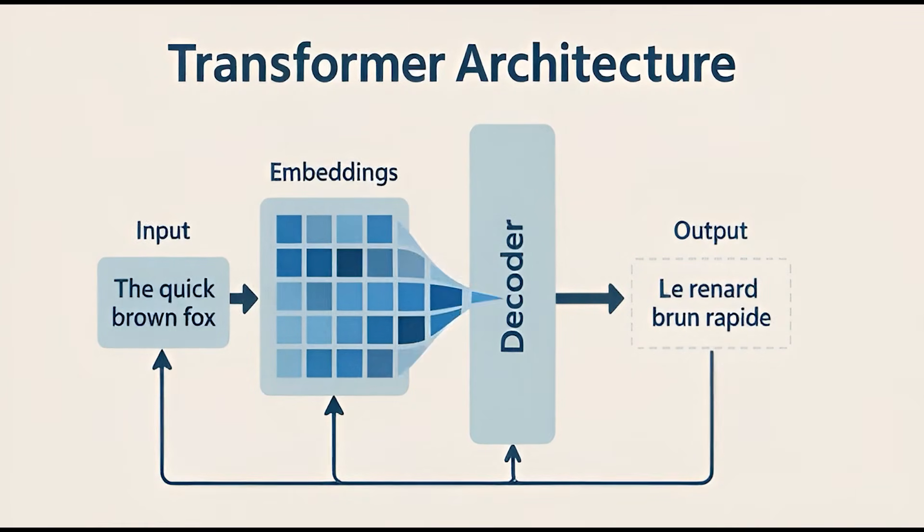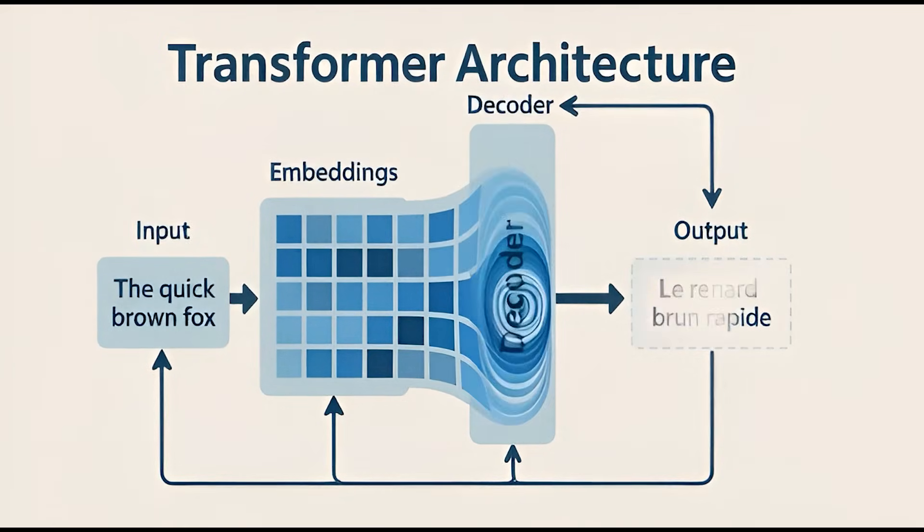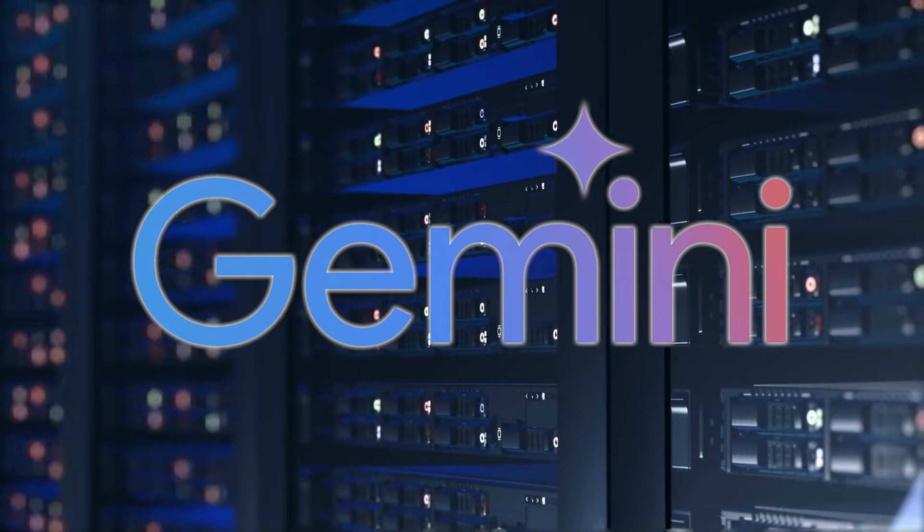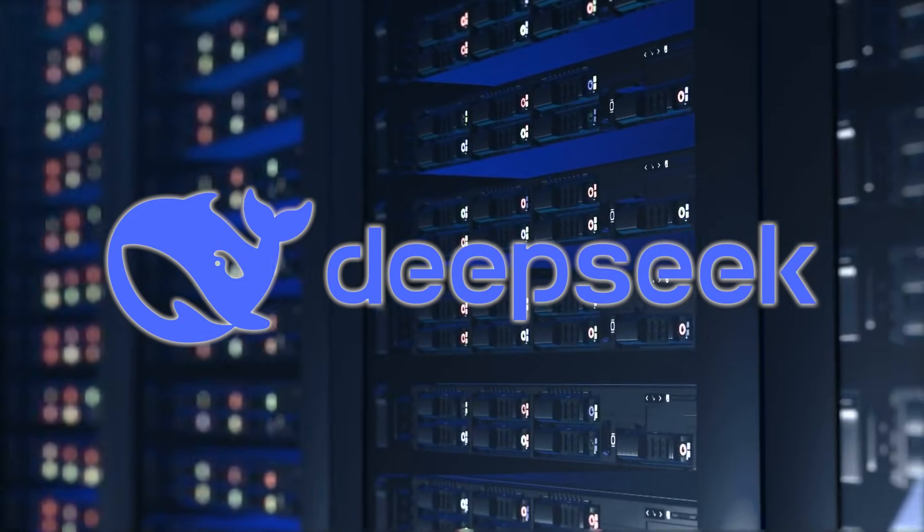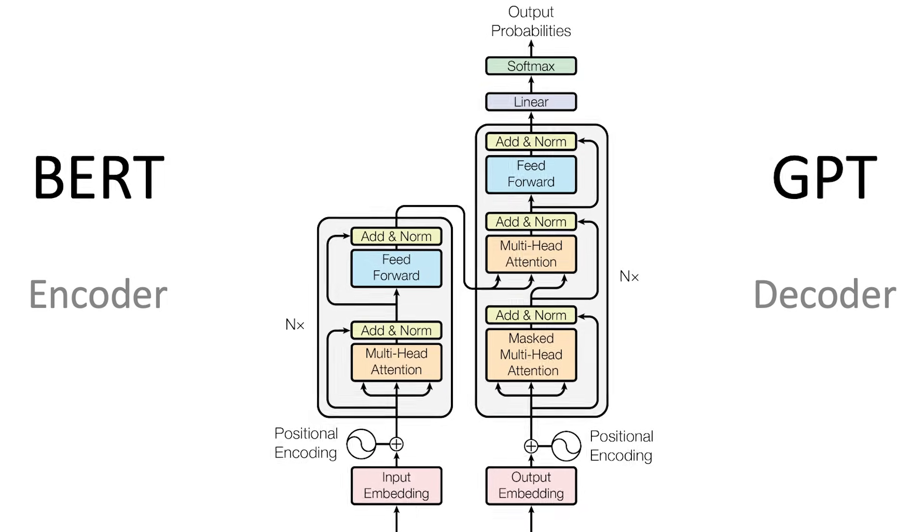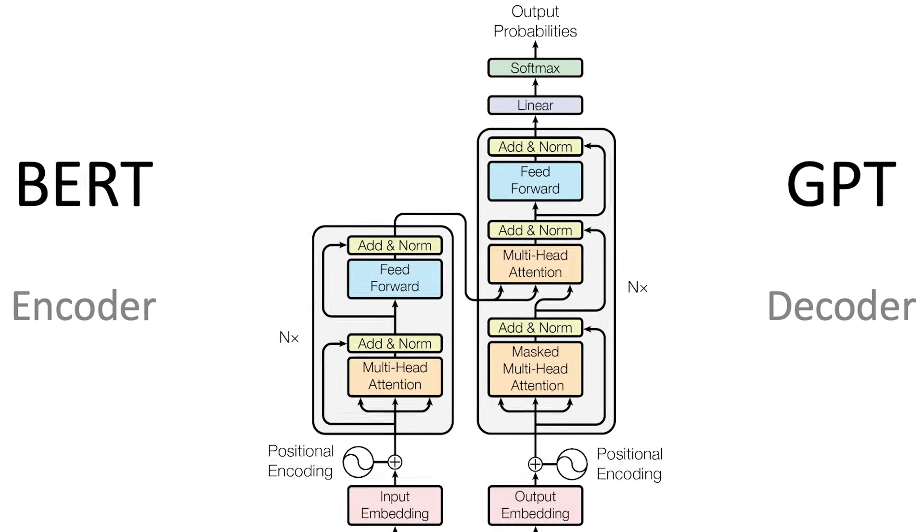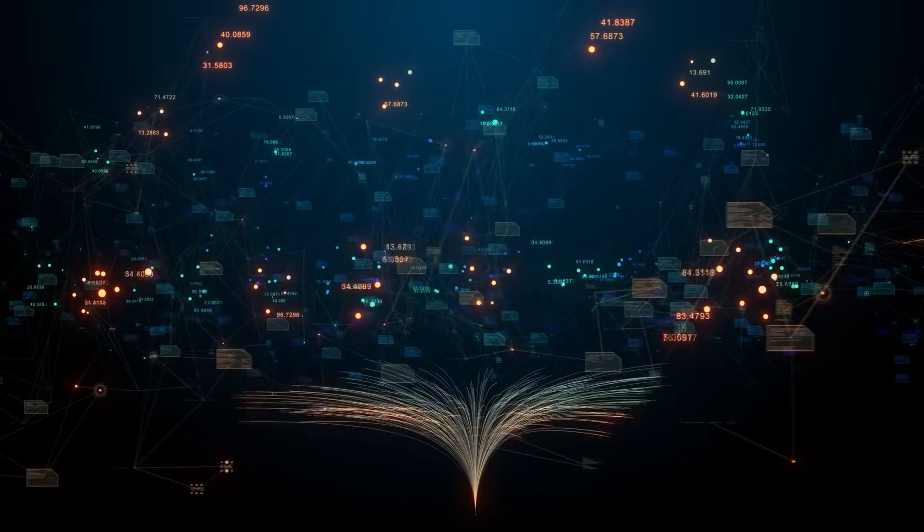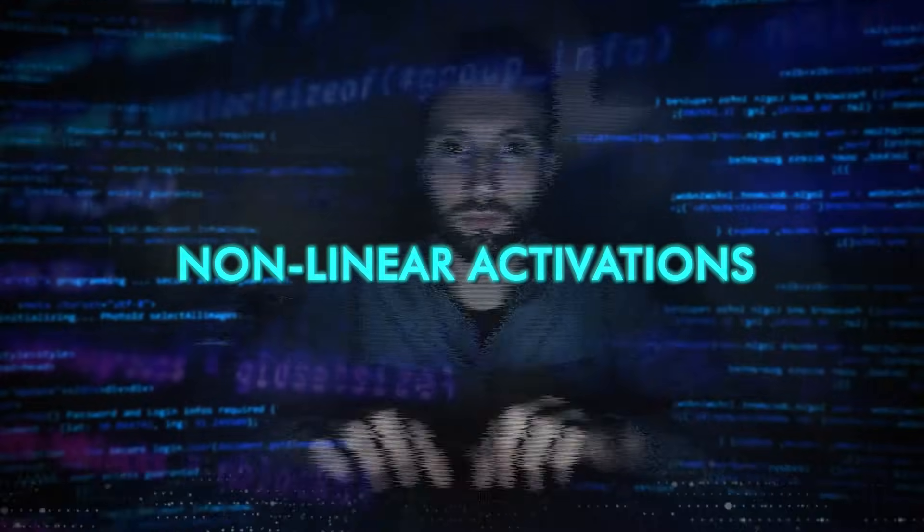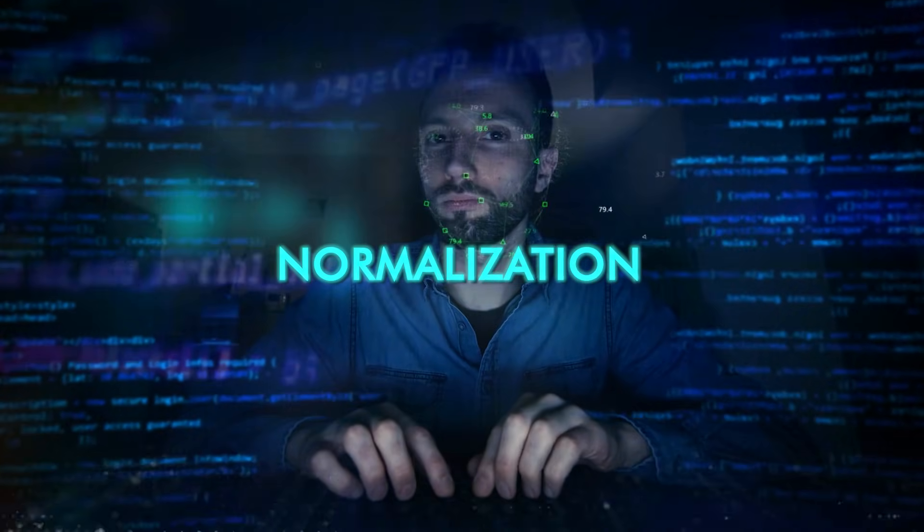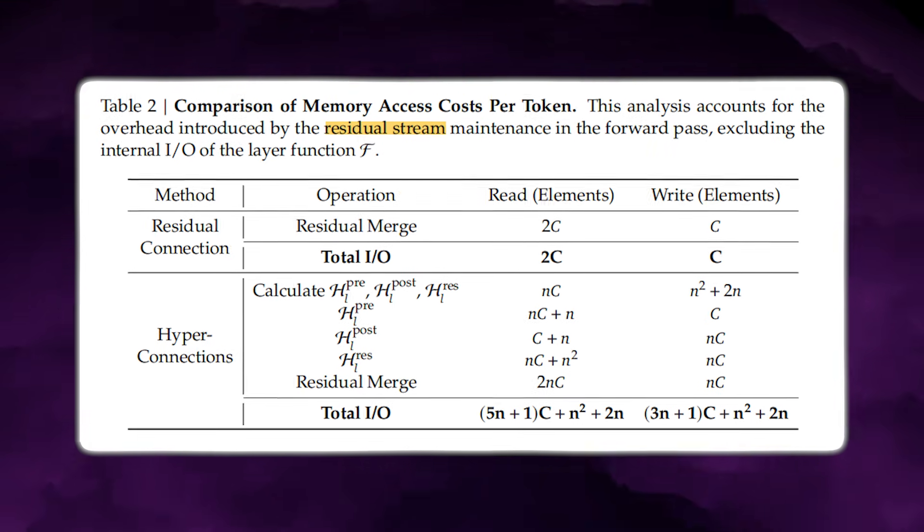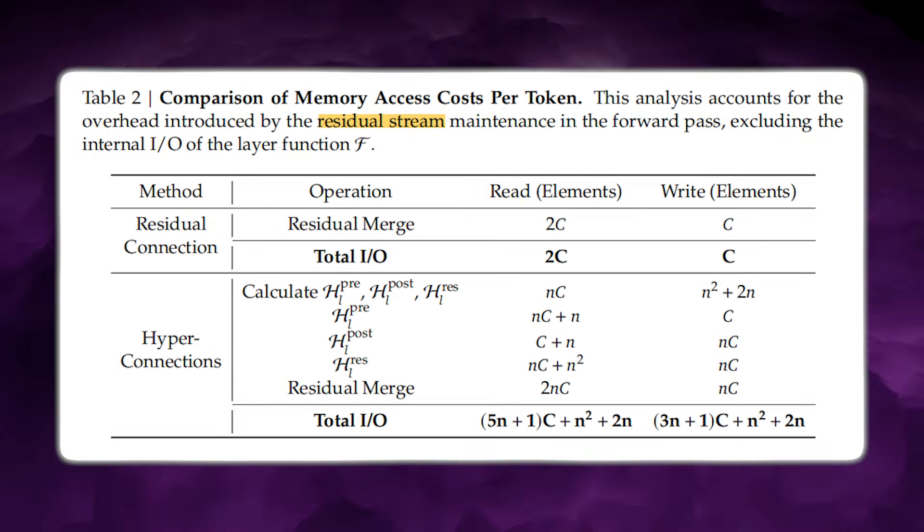To understand why this matters, you have to look at how transformers, the architecture behind GPT, Claude, Gemini, and DeepSeek's own language models, are structured. Each transformer block has two parallel roads for information. One is the main computation path, where attention heads and feed forward layers transform the hidden state using matrix multiplications, nonlinear activations, normalization, and learned parameters. The other is the shortcut that bypasses it, called the residual stream.